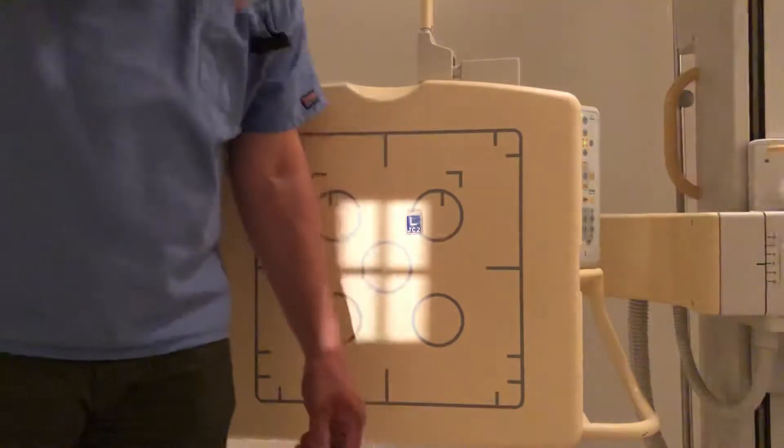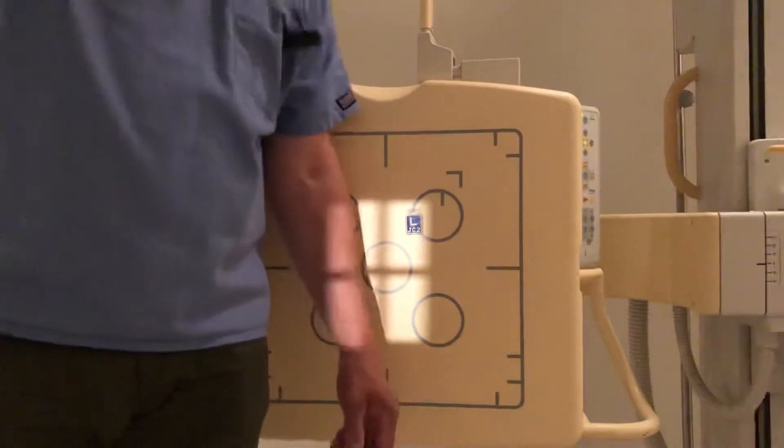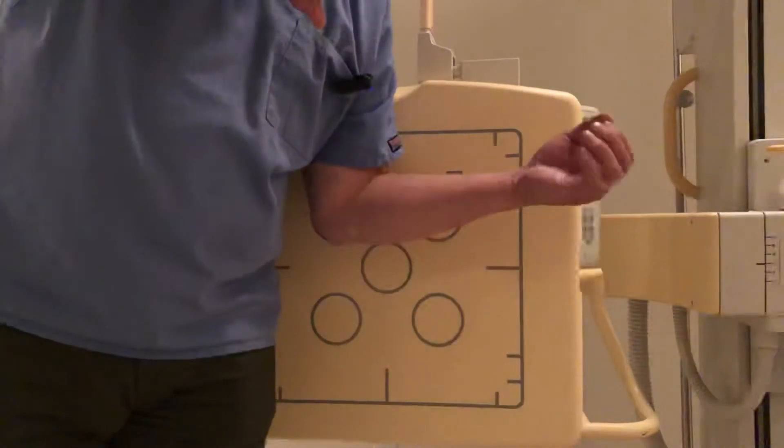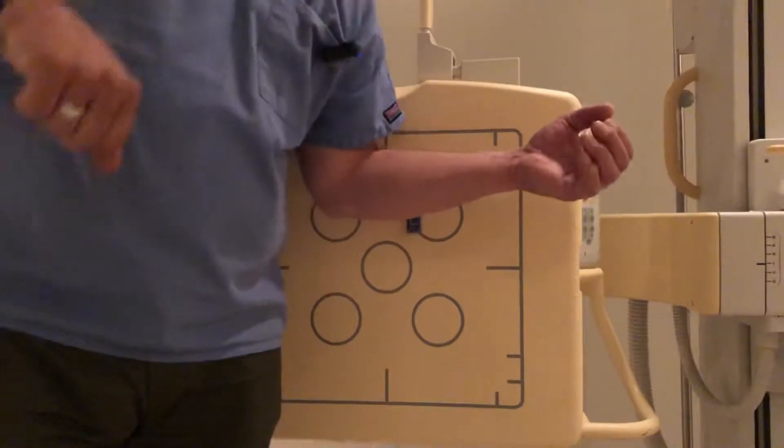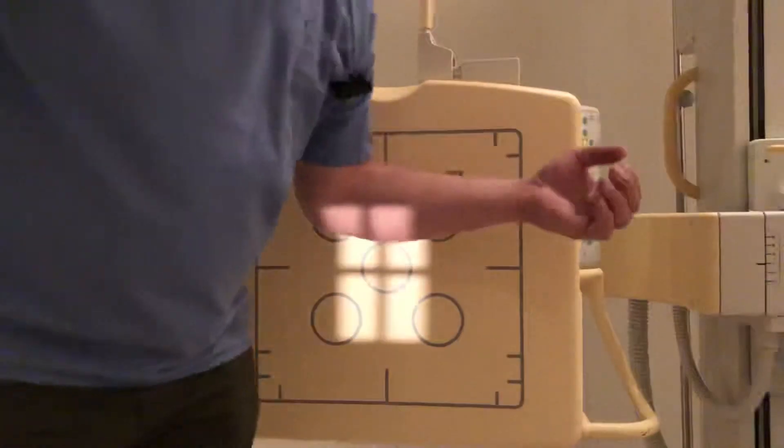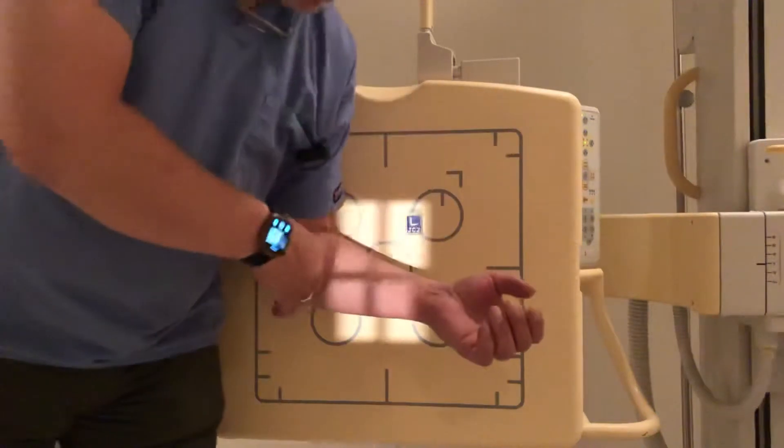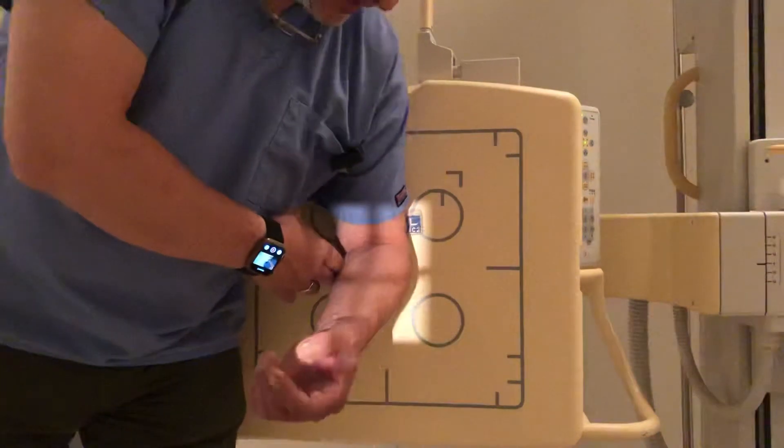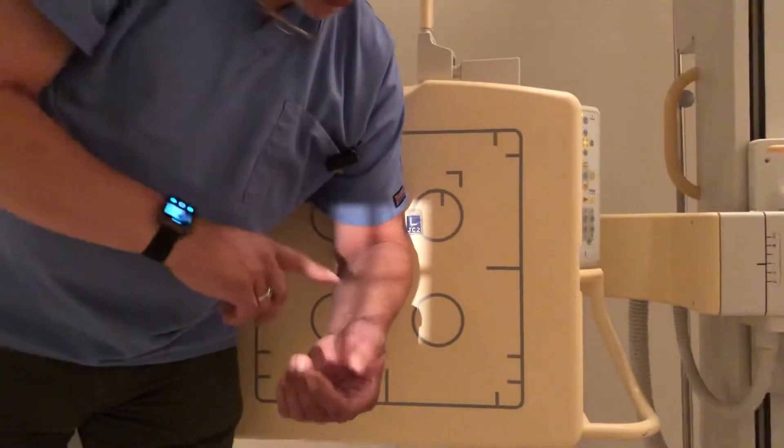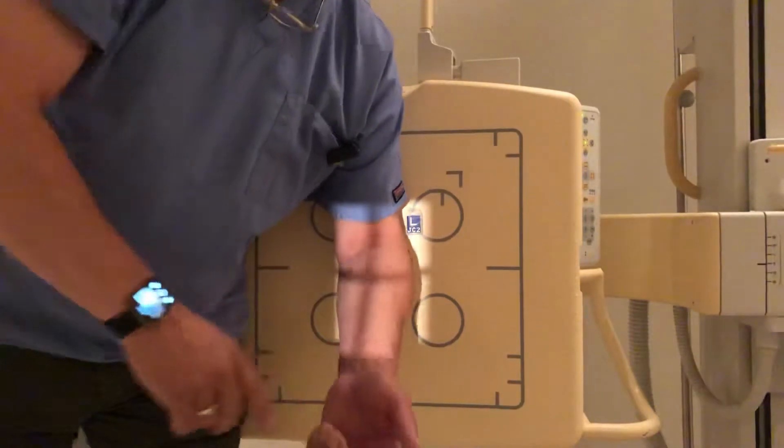Alright, so this is a trauma elbow series done upright when the arm is flexed about 90 degrees. So what we're going to do is they'll come in, then we're going to have them turn this way and see the shadow that's going up and down my forearm.